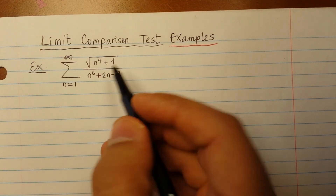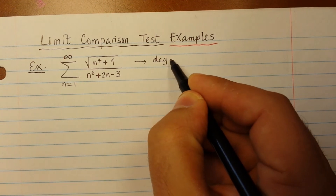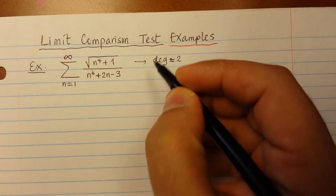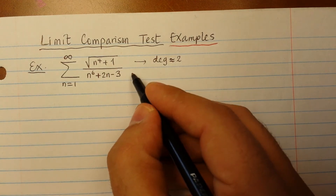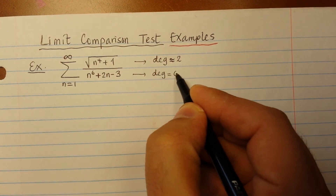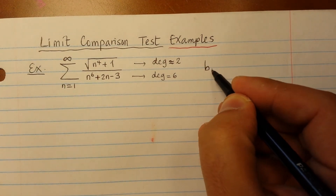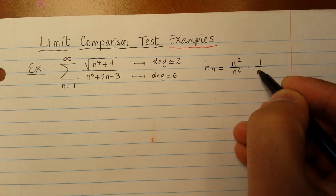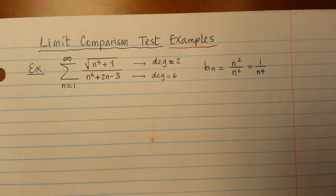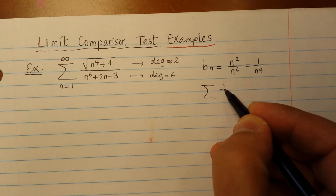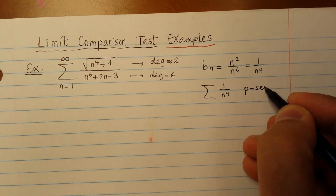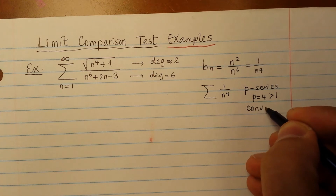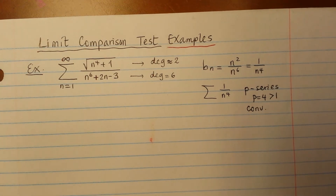The degree of the top kind of looks like 2, because you have n to the 4 and you take the square root, so it's just 2. At the bottom the degree is 6. So my choice for bn will be n squared divided by n to the 6, which is 1 over n to the 4. The sum of 1 over n to the 4 is a p-series with p equals 4, which is greater than 1, so this is a convergent series. We'll use that later.